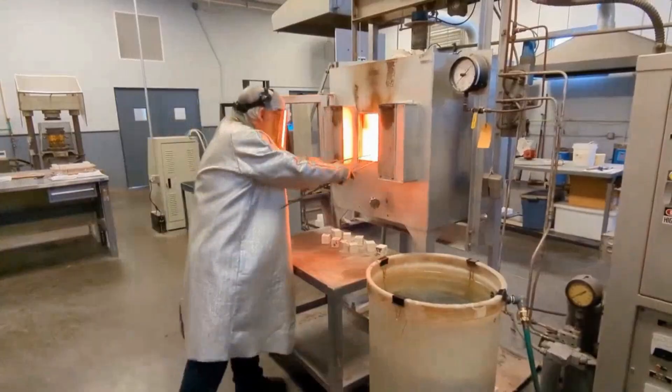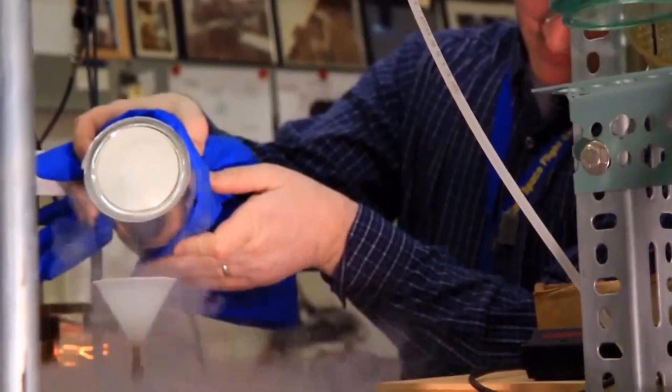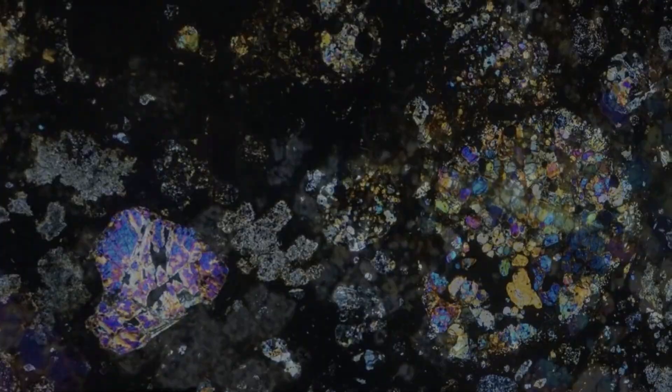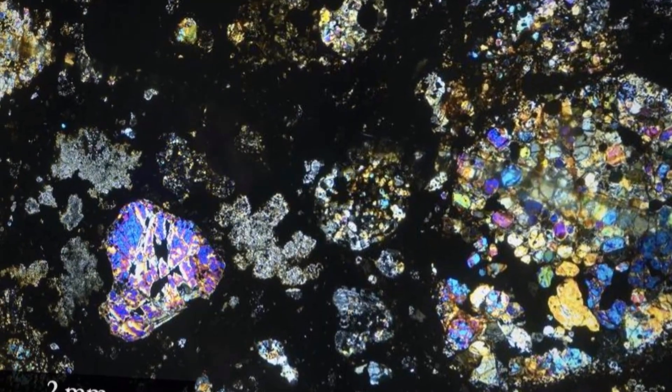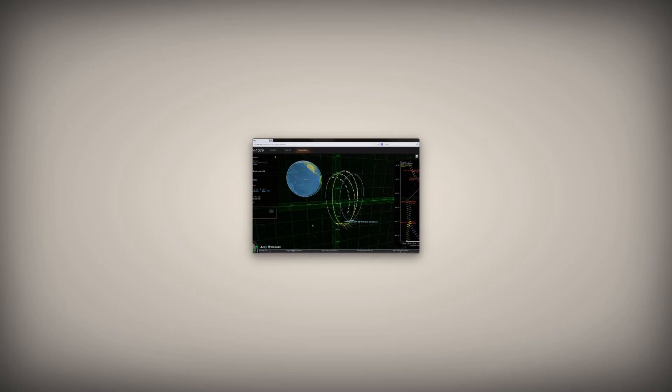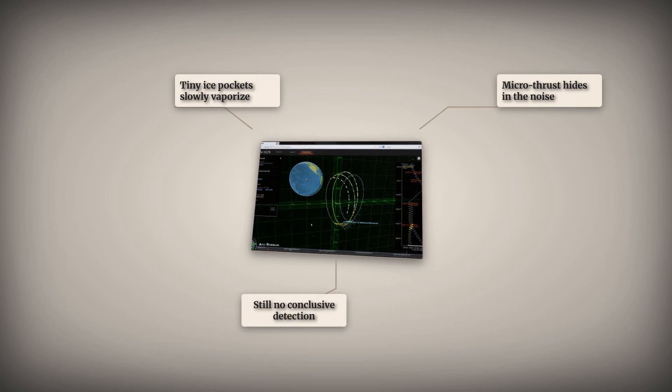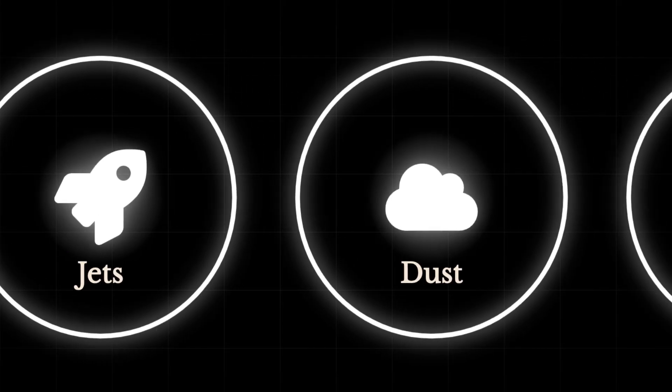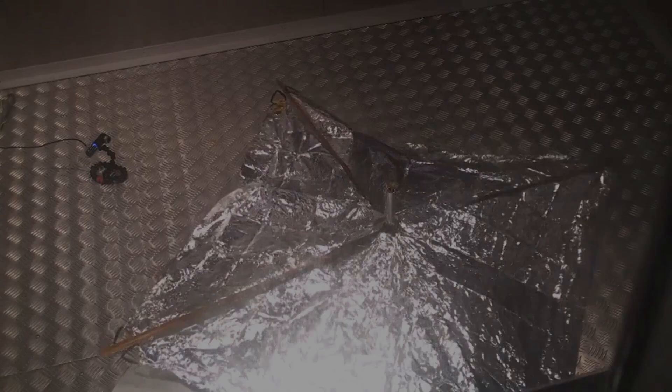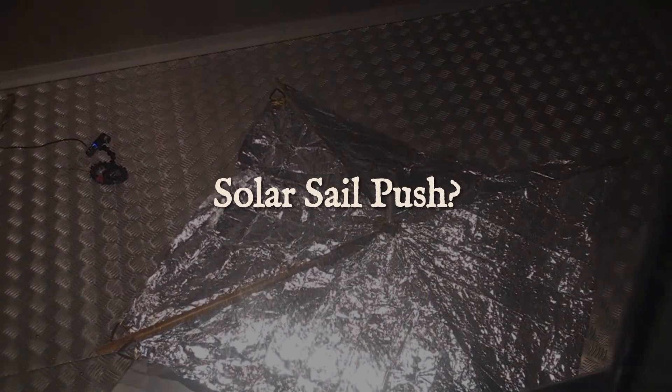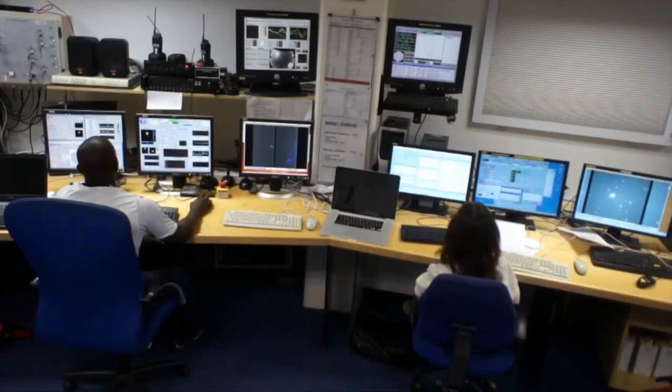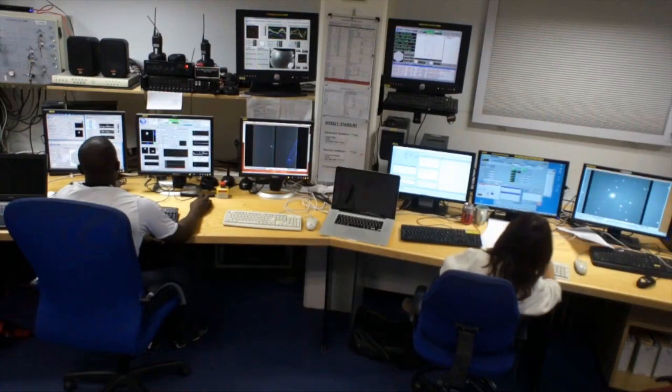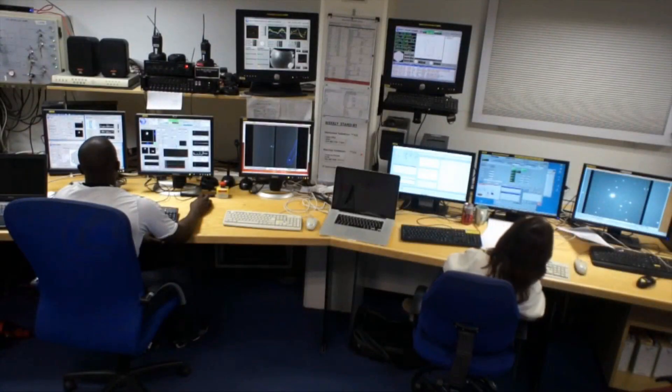A third natural route involves thermal fracturing or the release of super-volatile ices. If 3I-Atlas is rich in exotic materials, even small amounts of sublimation could provide persistent thrust below current detection limits. Each of these models predicts a unique signature: rotation-linked thrust for jets, brightness-only changes for dust, or a large surface area signal for radiation pressure. The challenge is that none has left a clear fingerprint in the data so far, keeping the field wide open for rigorous testing.